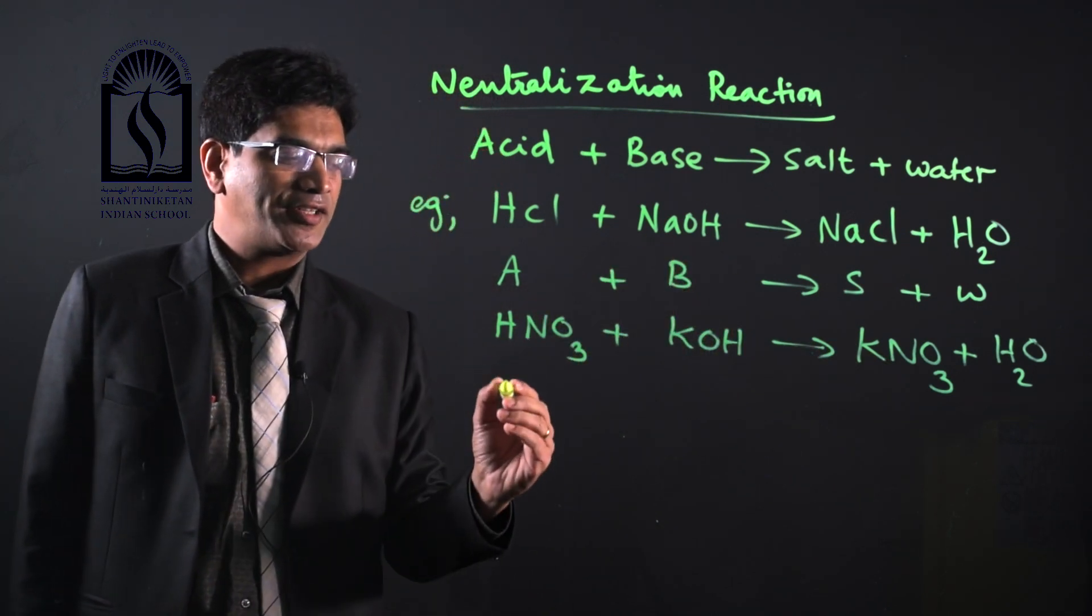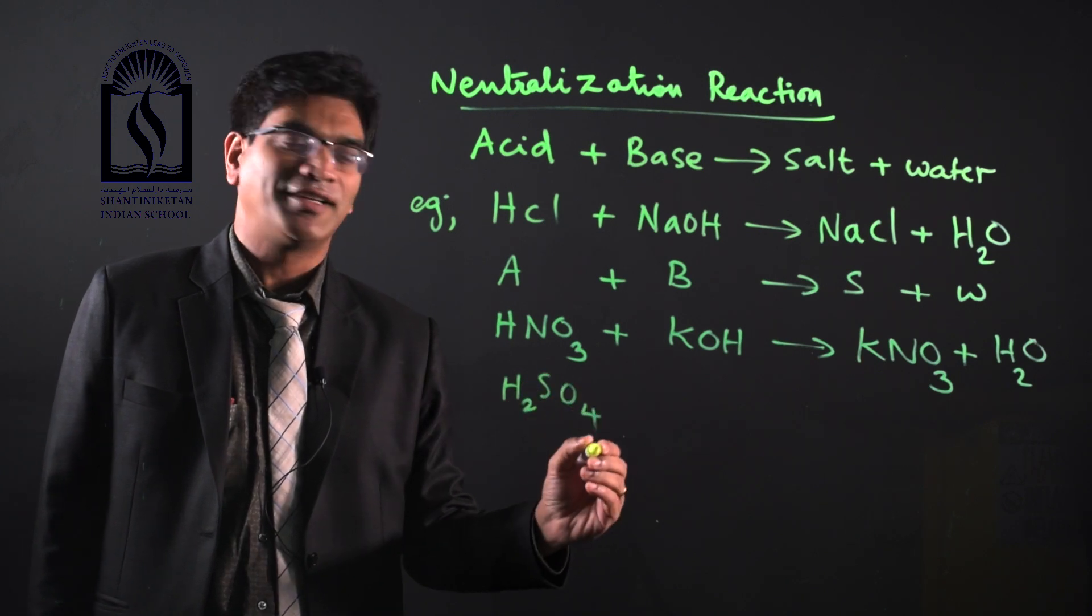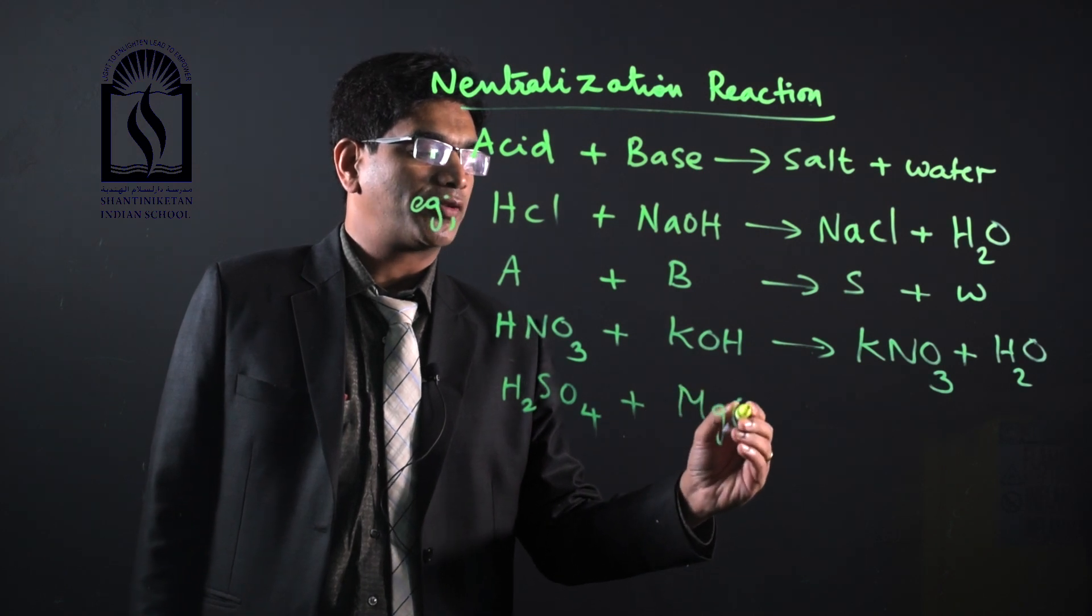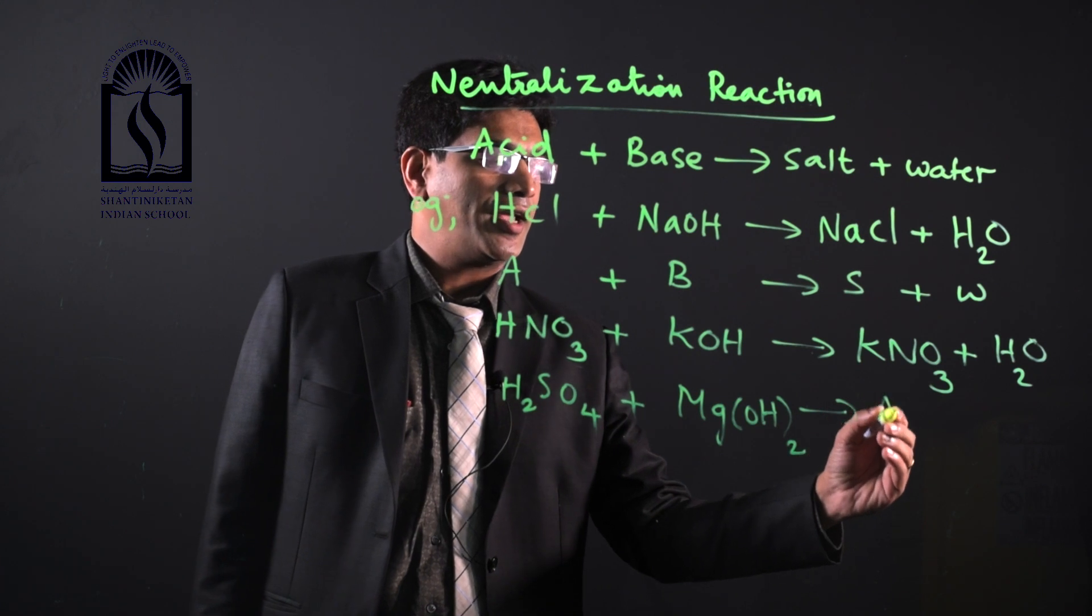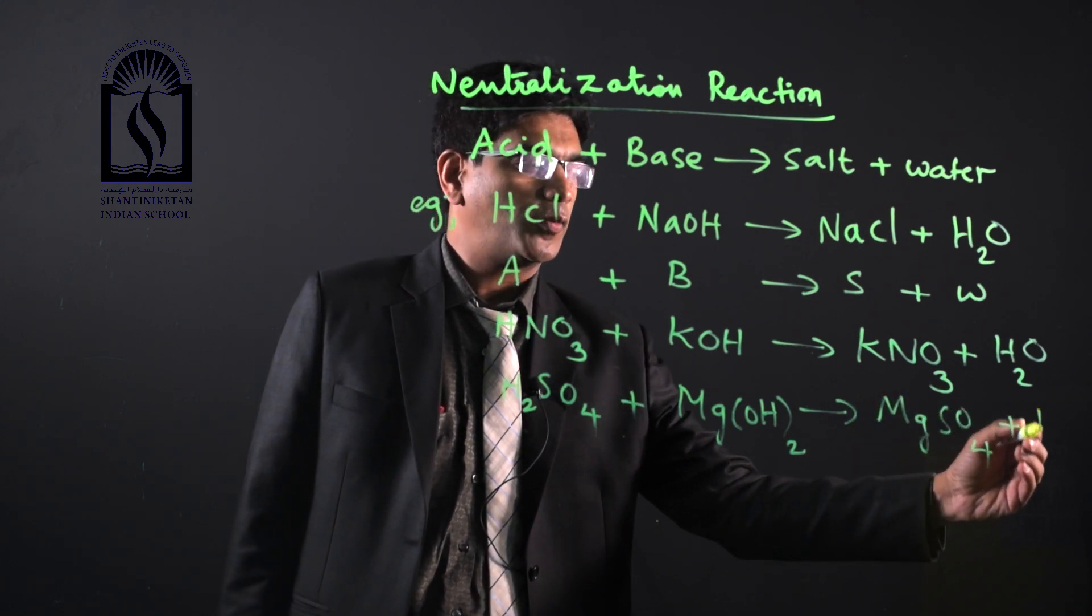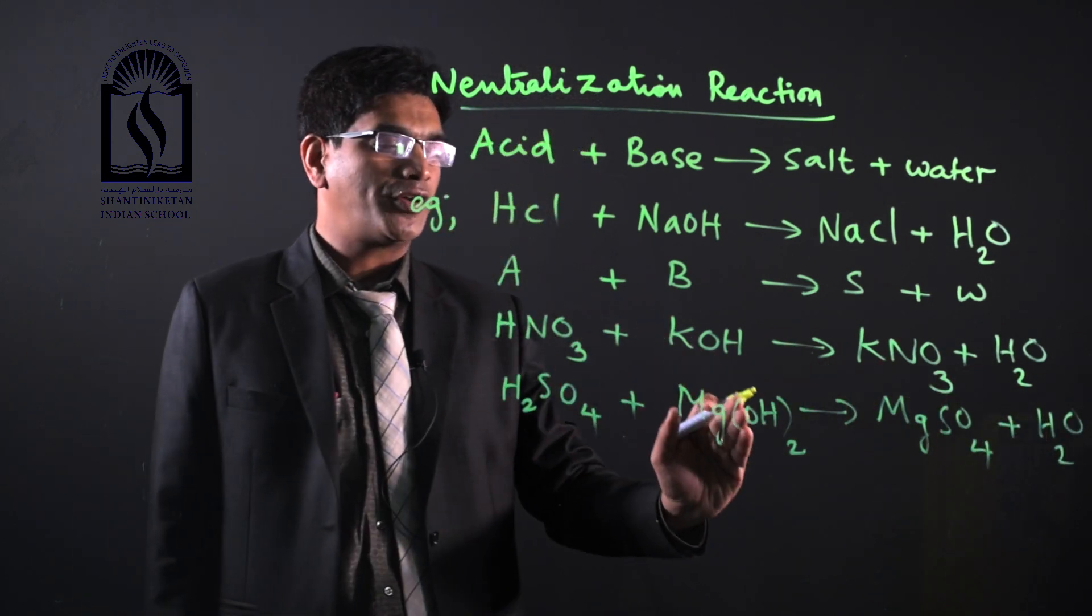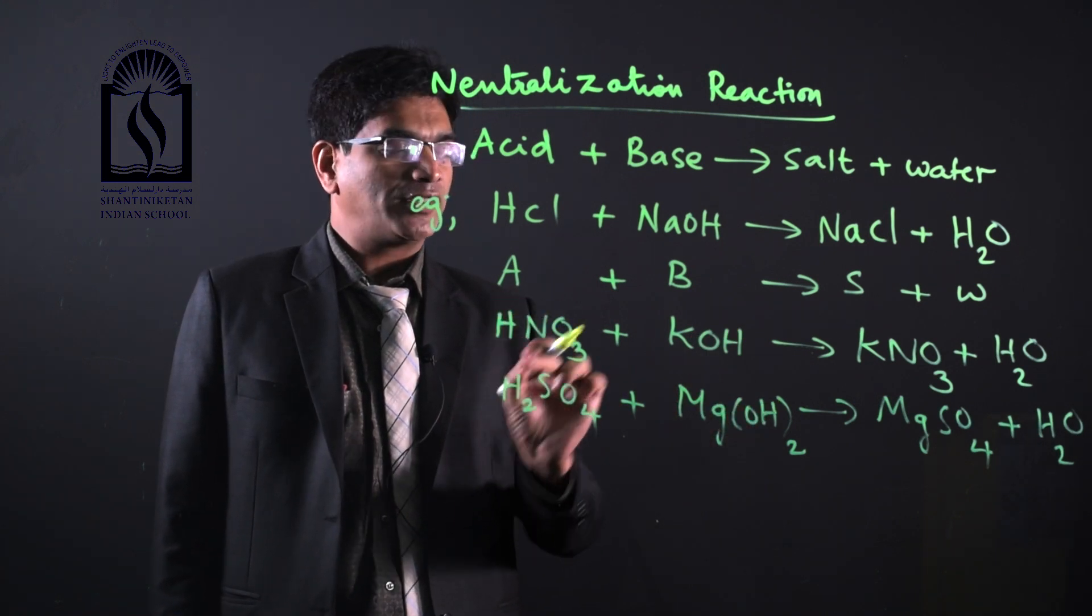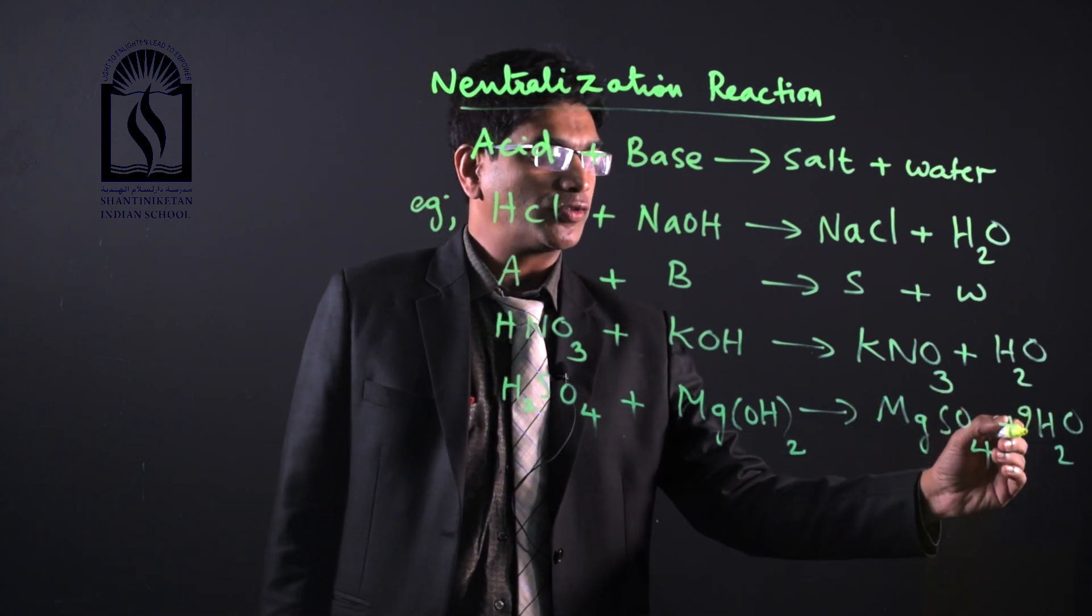Let's take another example: H2SO4 sulfuric acid reacts with magnesium hydroxide Mg(OH)2 and you get MgSO4 salt plus water. But here, there are two H+ ions and two OH- ions. The same number of H+ and OH- get neutralized, so you get two molecules of water.